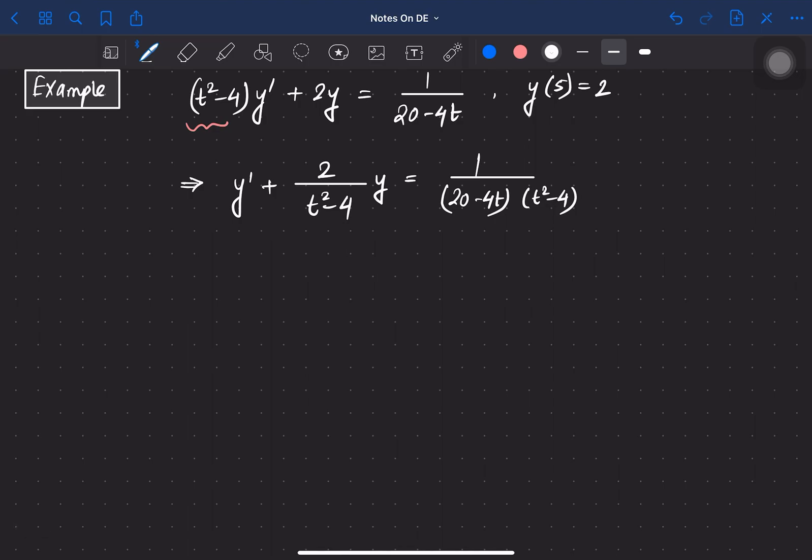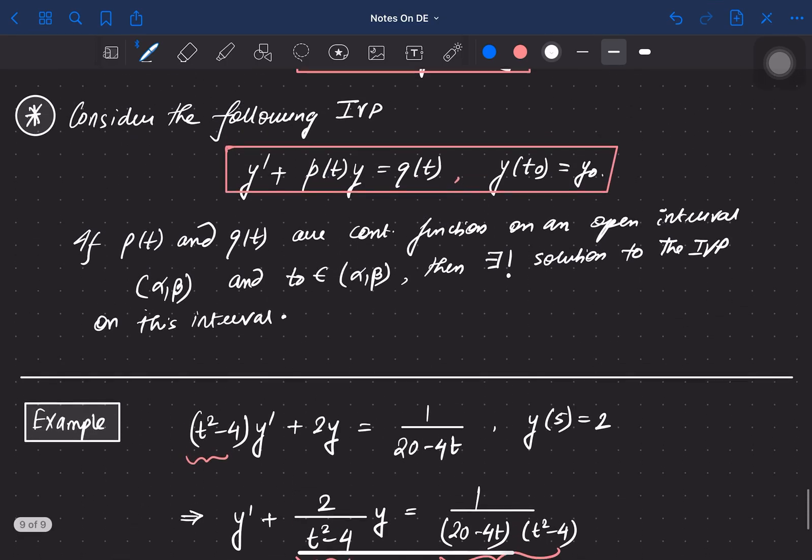points of t where these two functions are not defined. What are those points? Our functions are not continuous at these points. This is t = ±2, and this is t = 5. According to our form,